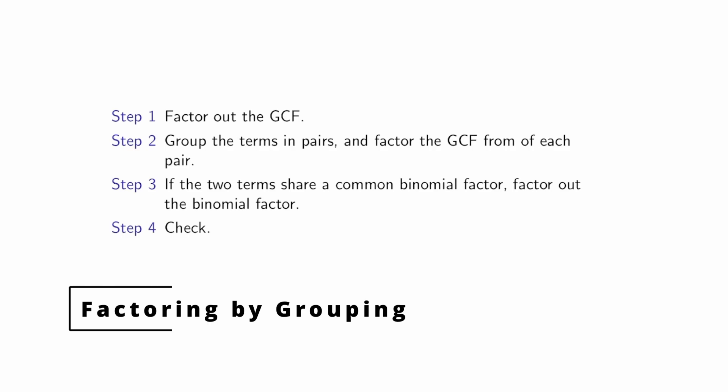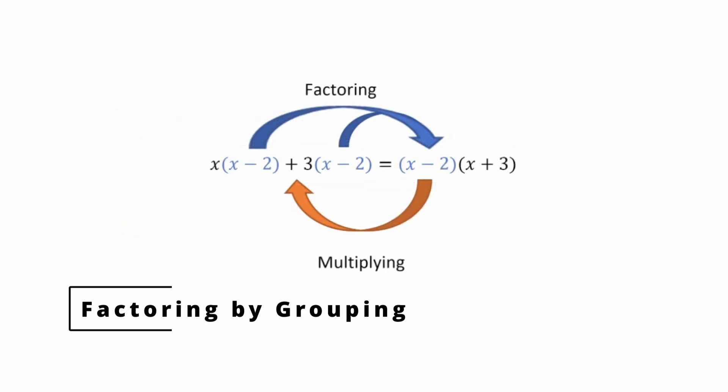But what did we do exactly? The first step is always to factor out the GCF from all terms — in the last problem it was 1, but you always want to check. Once you've factored out the GCF, you have pairs of terms, and you want to factor the GCF from each pair. Once you've factored the GCF from each pair, if all remaining terms share a common binomial factor, factor that out. To check your work, you're just reversing the process — redistributing the binomial factor back to each term.